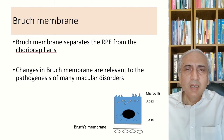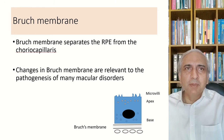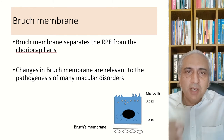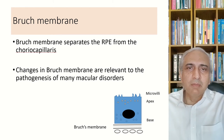Bruch's membrane separates the RPE from the choriocapillaris. Changes in Bruch's membrane are relevant to the pathogenesis of many macular disorders, especially age-related macular degeneration, where this membrane is affected.